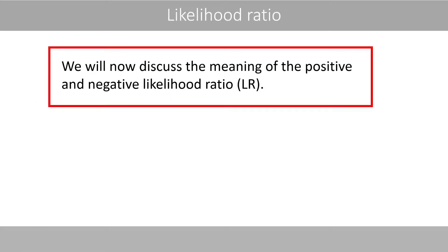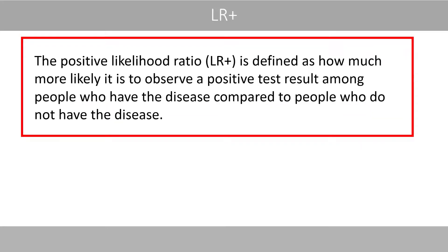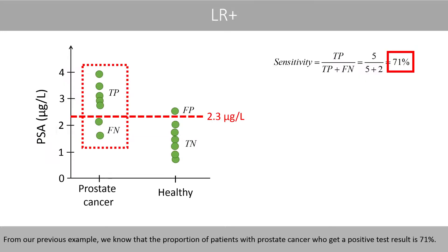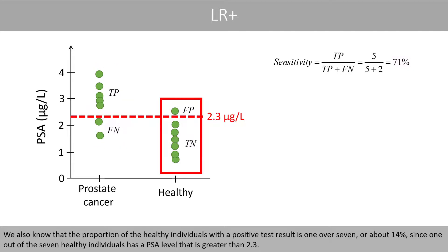We'll now discuss the meaning of the positive and negative likelihood ratio. The positive likelihood ratio is defined as how much more likely it is to observe a positive test result among people who have the disease compared to people who do not have the disease. From our previous example, we know that the proportion of patients with prostate cancer who will get a positive test result is 71 percent. We also know that the proportion of healthy individuals with a positive test result is 1 over 7, or about 14 percent.